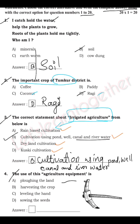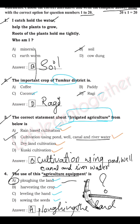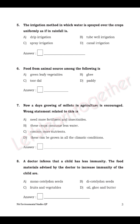Question 4: What is the use of this agricultural equipment shown in the figure? The options are plowing the land, harvesting the crop, leveling the land, or sowing the seed. This is a plow, so the answer is A — plowing the land.